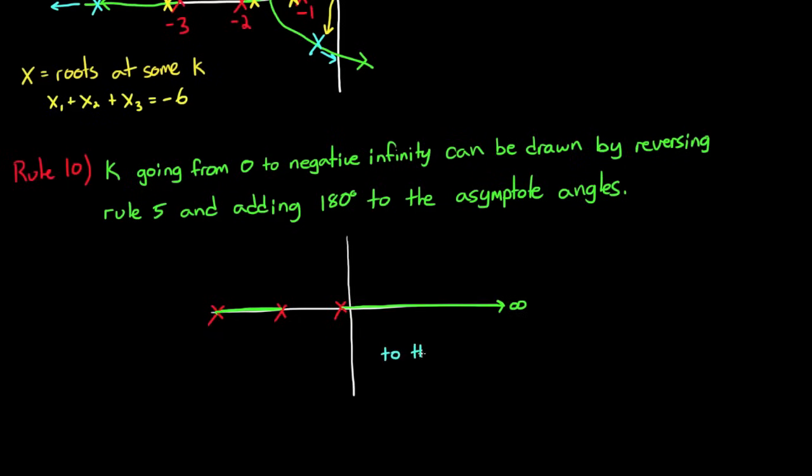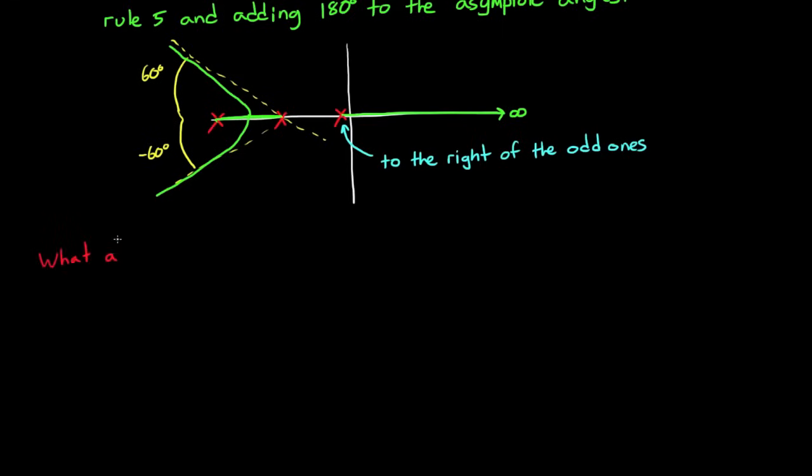I'll draw this one quick example with three poles. If you want to sweep from 0 to negative infinity for your gain, you draw to the right of the odd critical frequencies, so the first and the third. And the angle of the asymptotes are 60 and minus 60 off the negative real axis since we added 180 degrees to them. And the root locus would look something like this.